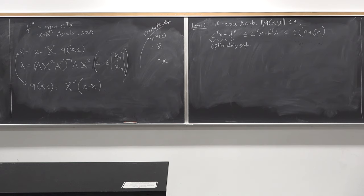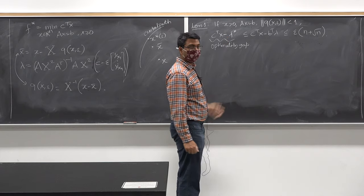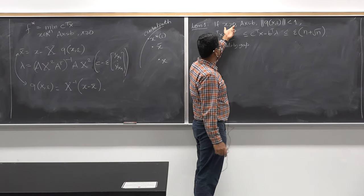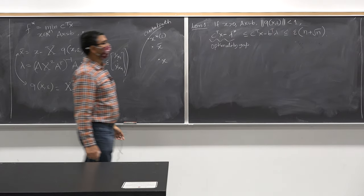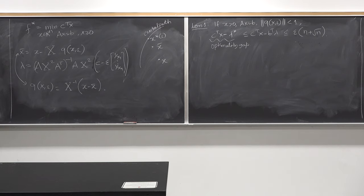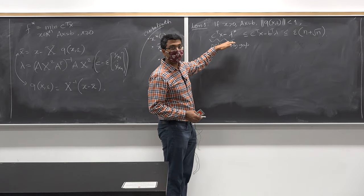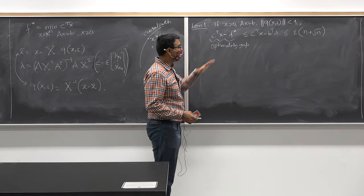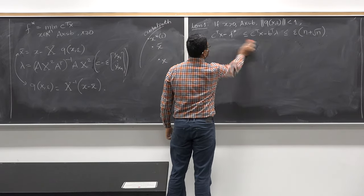As I make epsilon smaller and smaller, I am getting closer and closer to the optimal solution. But in order for that to be true, I need x greater than 0, Ax equal to b, and the norm of q less than 1 — those are the three conditions x and epsilon need to satisfy. This gives us the stopping criterion for our optimization: as soon as we are within the desired range of the optimal solution, we stop the iteration.